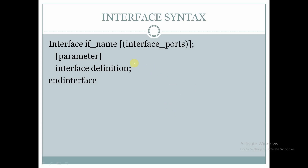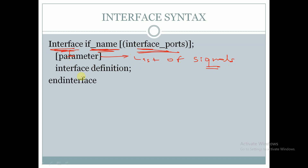Now let's look at the syntax of an interface. The syntax is: interface <interface_name> followed by square brackets and interface ports, then we declare the list of signals and the interface definitions, followed by endinterface.